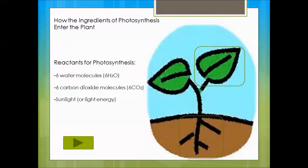How the ingredients of photosynthesis enter the plant? The reactants for photosynthesis are six water molecules, six carbon dioxide molecules, and sunlight or any light energy.